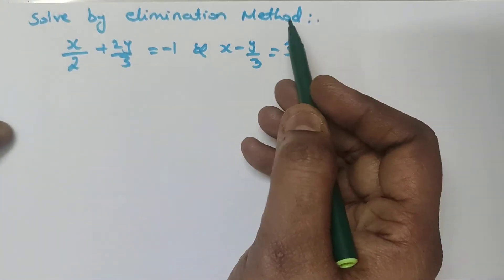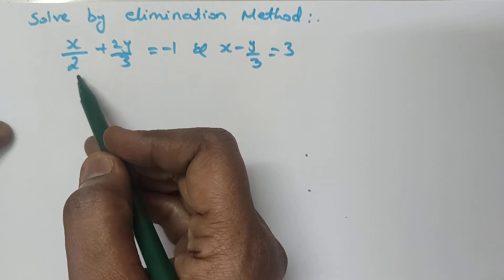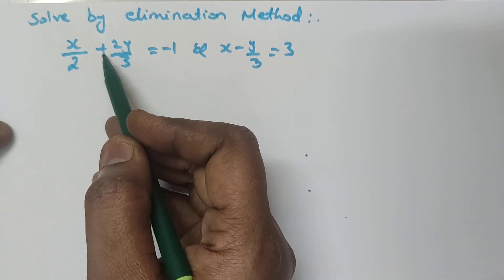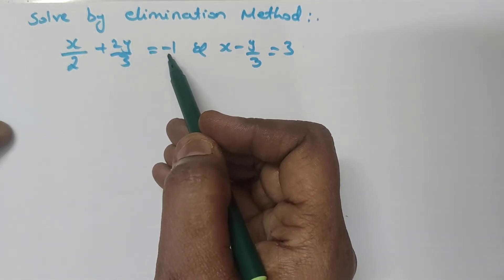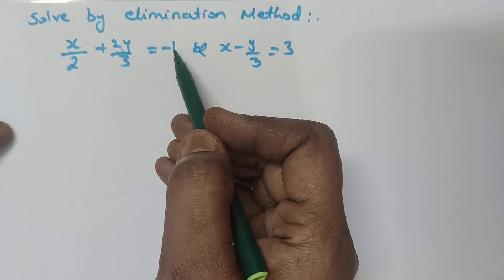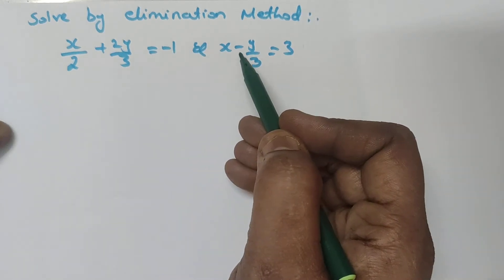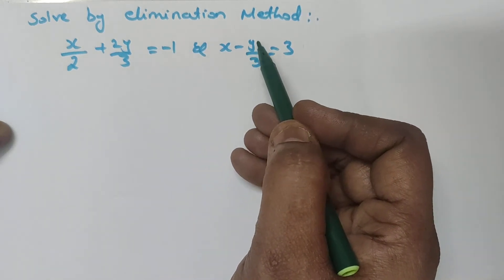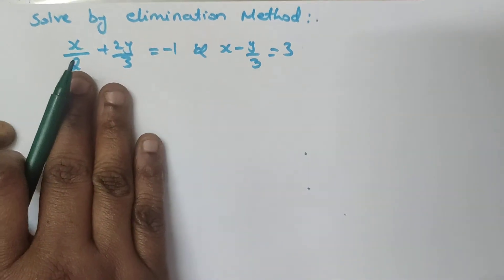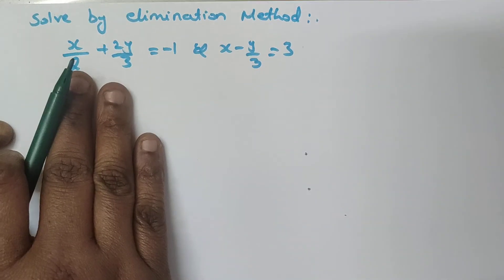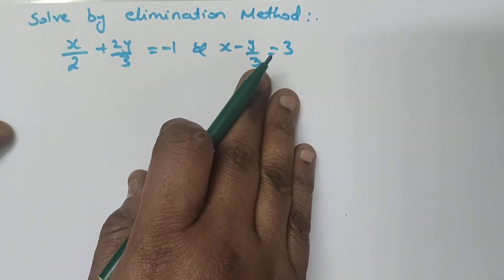Solve by elimination method: x divided by 2 plus 2y by 3 is equal to minus 1, and x minus y divided by 3 is equal to 3. This is the first given equation and this is the second given equation.